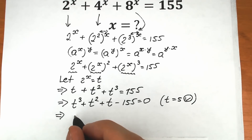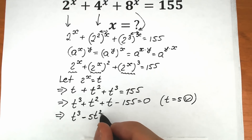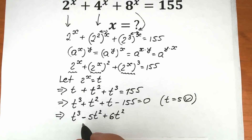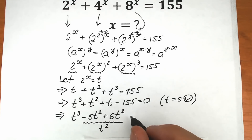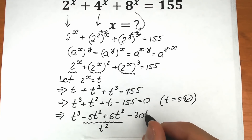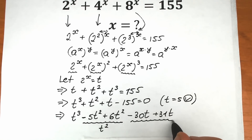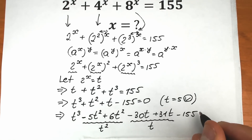So right here we have t cubed, and instead of t squared let's write minus 5t squared plus 6t squared — this is absolutely the same as t squared but helps us factor. And instead of t let's write minus 30t plus 31t — this is the same as t. And of course minus 155, which equals zero.